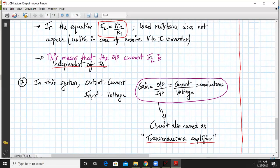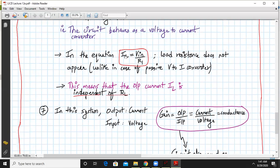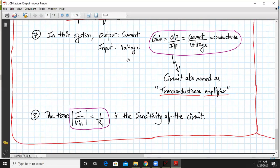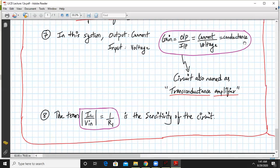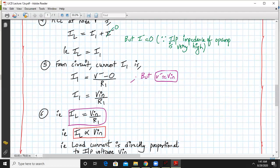In this voltage to current converter system, output is current, input is voltage. What will be the gain? Output upon input. The output is current and input is voltage. What will be the unit? Conductance. Since there is a transfer of voltage to output current, we call it a transconductance amplifier. The term mod of IL divided by VIN equals 1 upon R1 is the sensitivity of the circuit. Higher sensitivity means it can even convert very low voltages into currents or detect very low voltages or currents.